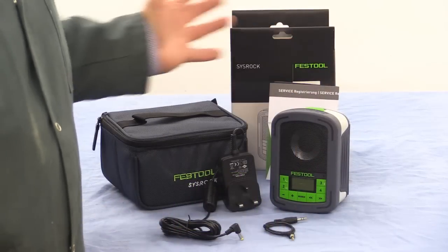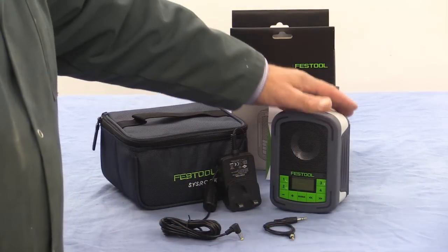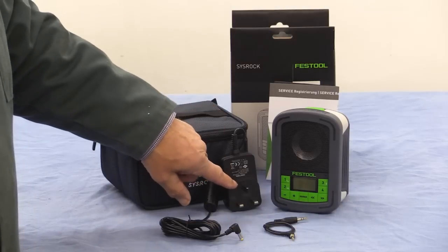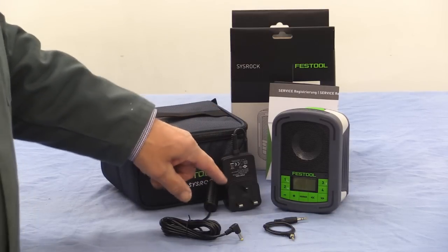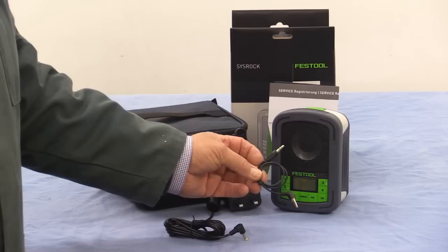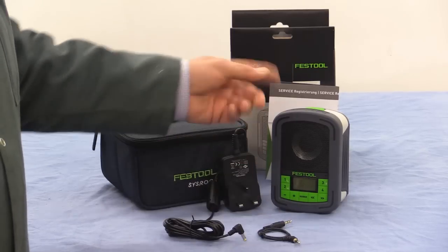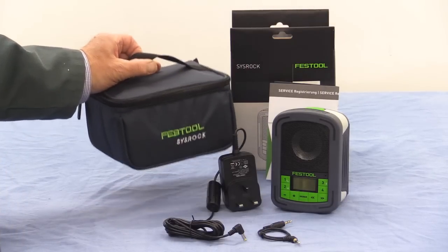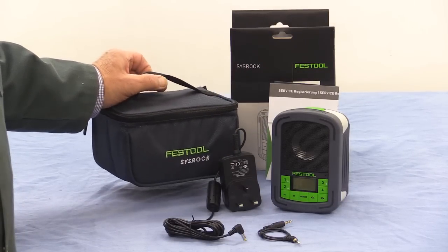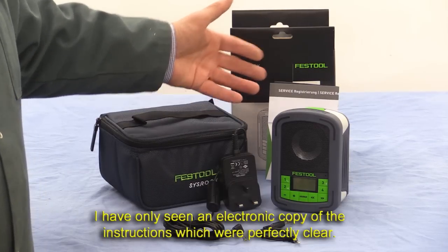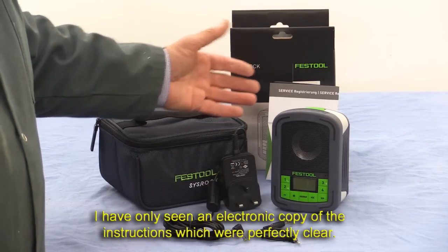When you open the box, this is what you'll find inside. You'll find the CISROC itself, a power supply with some sort of mains plug that suits the country you're in, a lead which allows you to connect an MP3 player directly to the CISROC, and a carrying case which looks familiar, very similar to the one that the CISLites come in. And of course, there's registration documents and instructions as well.